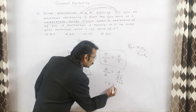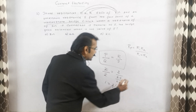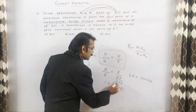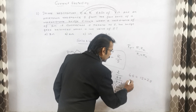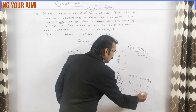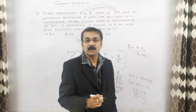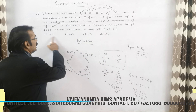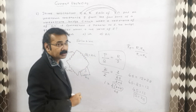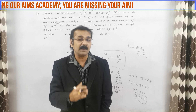Let us cancel the 2s: we get 1 equals 2 times (6 plus S) divided by 6S. Cross-multiplying, we get 6S equals 12 plus 2S. Taking 2S to the other side, we get 6S minus 2S equals 12, so 4S equals 12, and S finally equals 3 ohms. We got the answer with an elaborated solution. The answer is S equals 3 ohms.